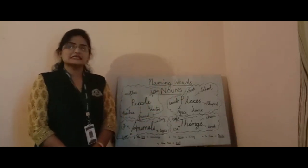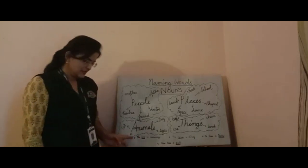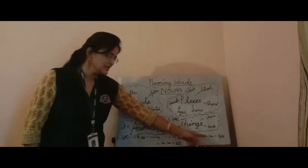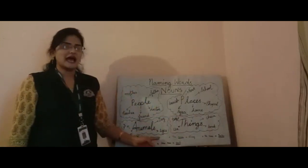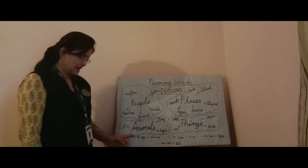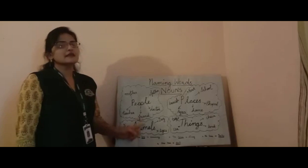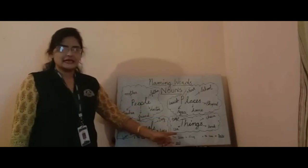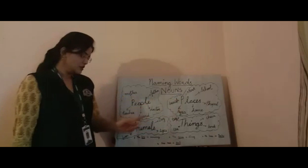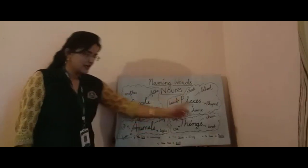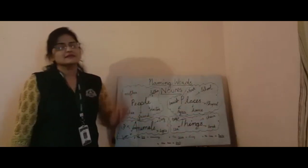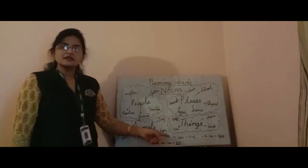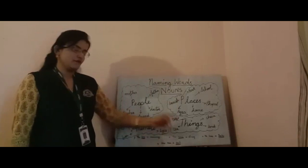Now let us read a few sentences. First: the boy is running. Second: the horse is strong. Third: he lives in Delhi. And last: she has a doll. In the first sentence, the word 'boy' is a naming word of a person. In the second sentence, the word 'horse' is a naming word of an animal. In the third sentence, the word 'Delhi' is a naming word of a place. And in the last sentence, the word 'doll' is a naming word of a thing.